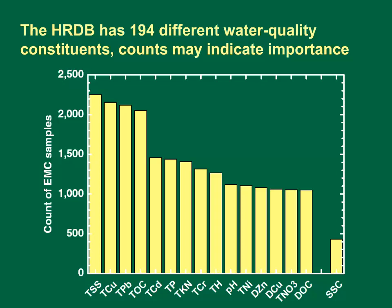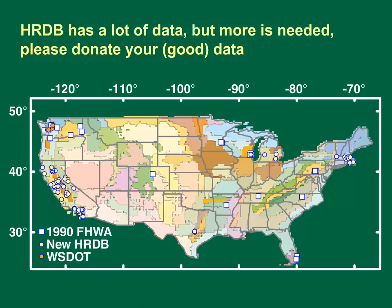The suspended sediment concentration at 451 samples is shown because the USGS has found total suspended solids, TSS, to be fundamentally unreliable for water quality analysis. More recently, a number of highway and urban runoff studies have come to the same conclusion about TSS.